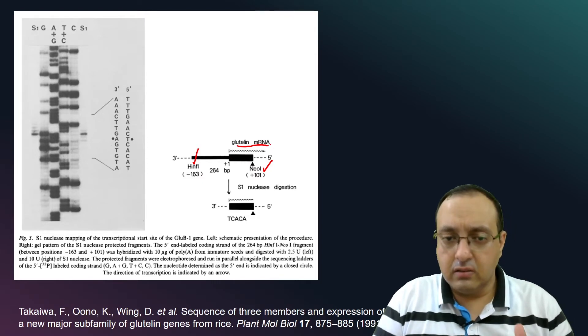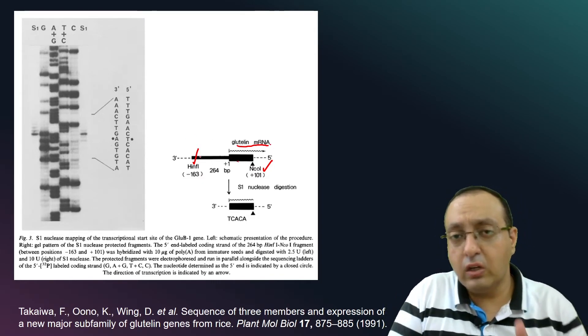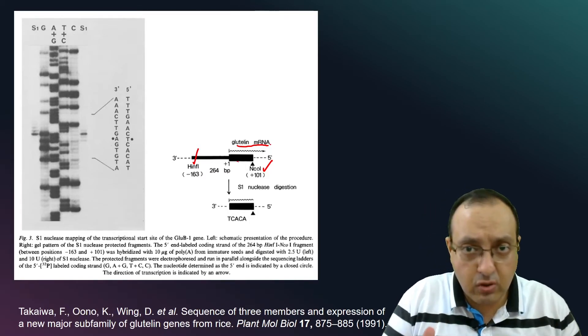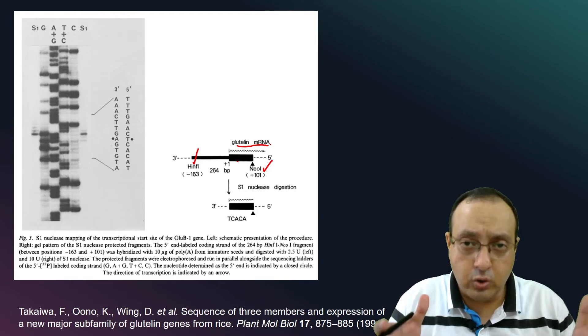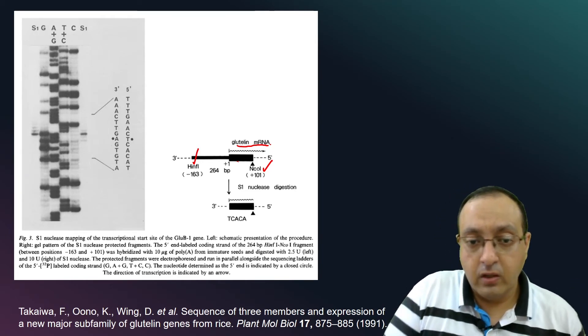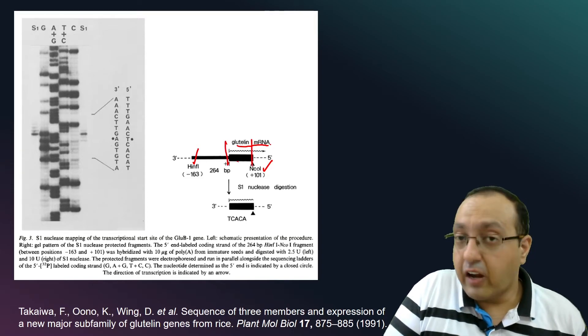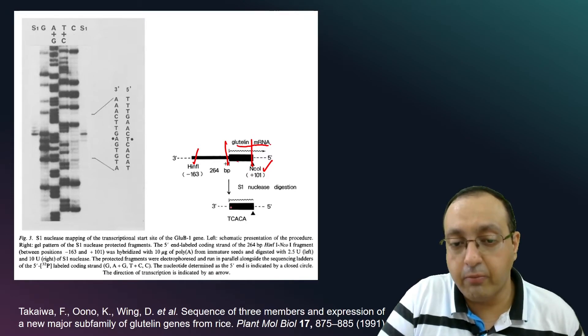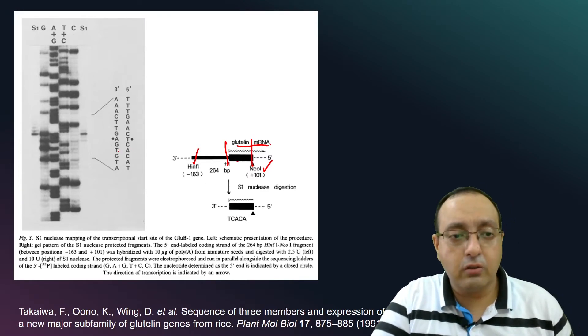Now take note here that this fragment, the radiolabeled DNA fragment, usually spans upstream of the transcriptional start site because you want to incorporate the transcriptional start site for sure. So this is the labeled fragment and this will form the double-stranded hybrid DNA-RNA hybrid. And based on this reaction, you can see this Maxim Gilbert sequencing.